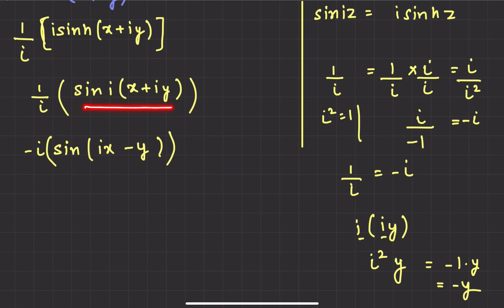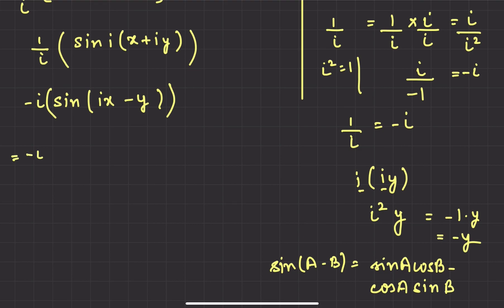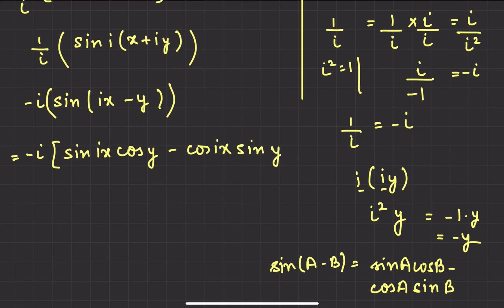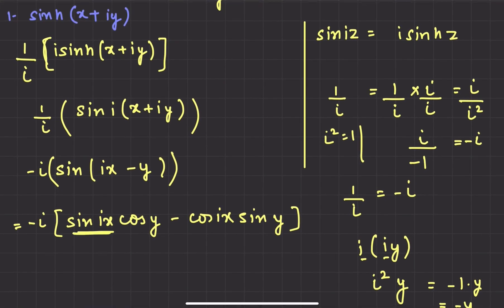We can't apply the sin(a+b) identity directly because iota is present, but we can apply the sin(a−b) identity here. So what is sin(a−b)? It equals sin a·cos b − cos a·sin b. We have minus iota out front. So it becomes: minus iota times [sin(ix)·cos(y) − cos(ix)·sin(y)].